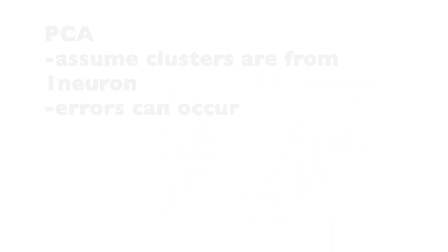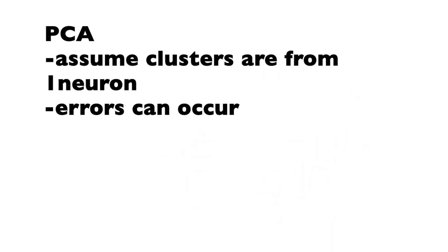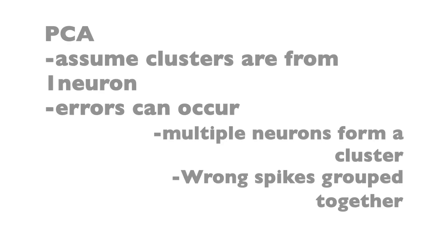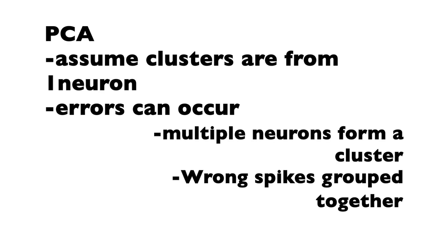Obviously errors can occur where multiple neurons end up in one cluster or wrong spikes get grouped together, but this gives you a general overview of what the process is like.